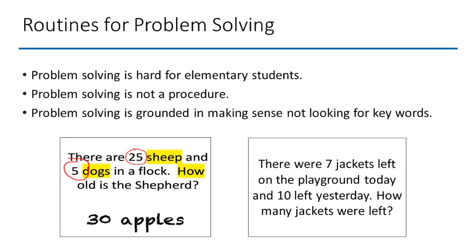Problem solving in general is about making sense — not keywords, tricks, and tips. Look at the '30 apples' problem on the lower left — kids will give you the answer three out of four times because they're circling and highlighting and thinking is factored out altogether. On the right: 'There were seven jackets left on the playground today and 10 left yesterday — how many jackets were left?' 'Left' means subtract, but to solve that problem you have to add. We pursue answers without arming kids with routines for thinking.